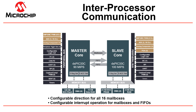The mailbox mechanism is suited for critical and small amounts of data, while the FIFO is better suited for transferring large amounts due to its 32-word buffer depth. For example, an application can use the slave core to control a motor almost independently, with minimal communication with the master core.